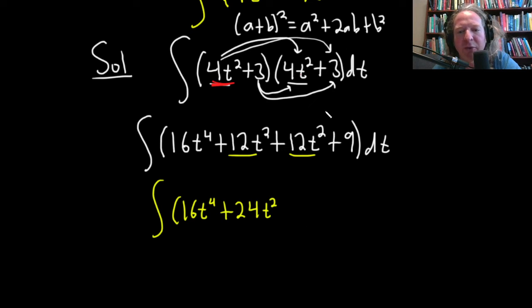12 plus 12 is 24. And then plus our 9 here, dt. Really cool. All right, so now we can just apply the power rule.